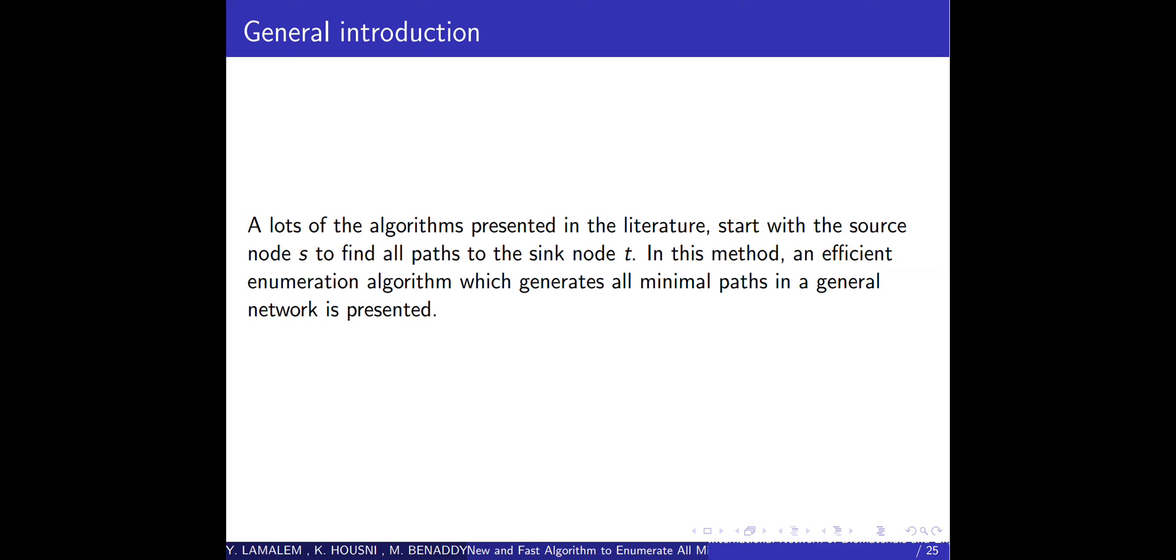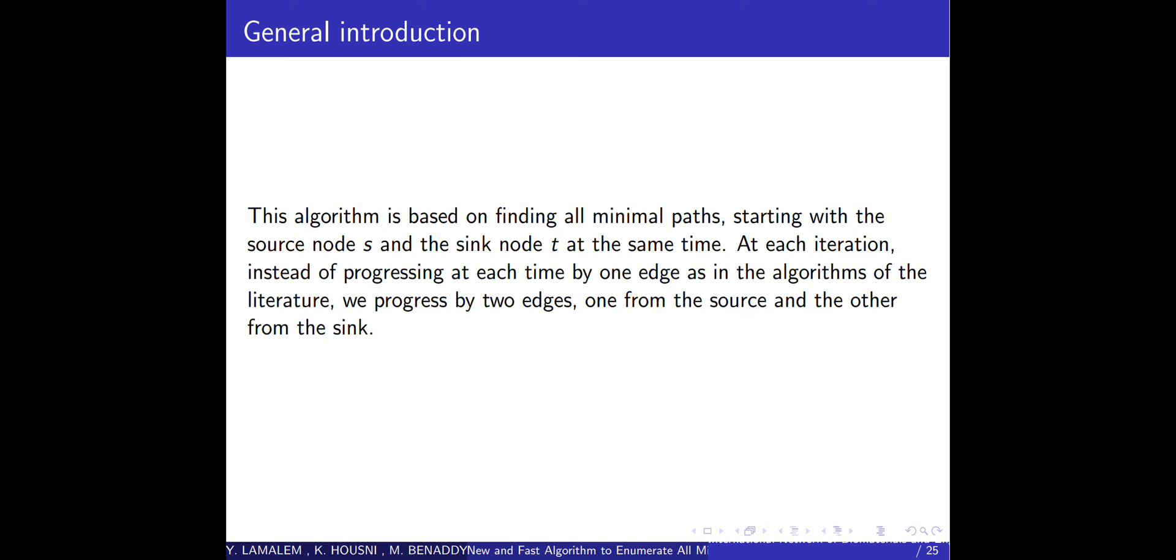A lot of the algorithms presented in the literature start with the source node S to find all paths to the sink node T. In this method, an efficient enumeration algorithm which generates all minimal paths in a general network is presented. This algorithm is based on finding all minimal paths starting with the source node S and the sink node T at the same time.